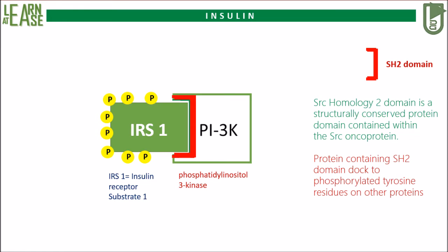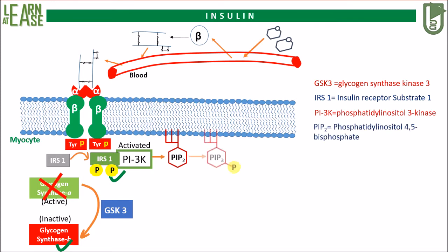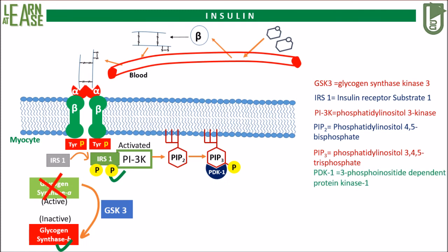The activated PI3K acts on phosphatidylinositol-4,5-bisphosphate (PIP2) and phosphorylates it, causing its conversion to phosphatidylinositol-3,4,5-trisphosphate, abbreviated as PIP3. Another enzyme, 3-phosphoinositide-dependent protein kinase 1, abbreviated as PDK1, will bind to PIP3 and gets activated.